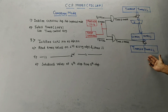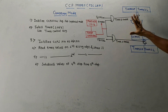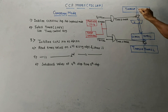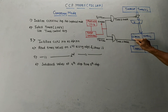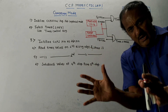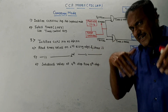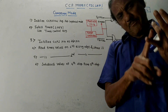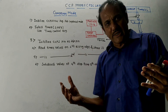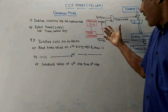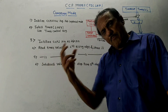For capture mode, the CCP1 pin is used as an input pin. Select Timer 1 or Timer 3. Whenever an event occurs, that event will be captured — the contents of, say, Timer 3H and Timer 3L will be captured into CCPR1H and CCPR1L, which is a 16-bit register. The event can be captured on a rising edge, falling edge, 4th rising edge, or 16th rising edge.